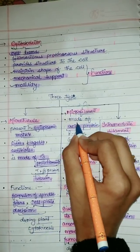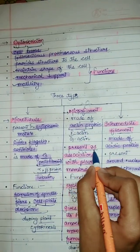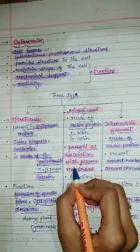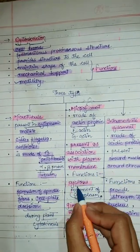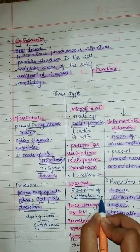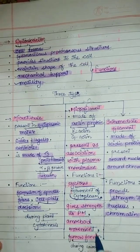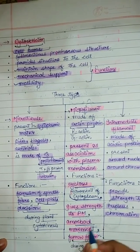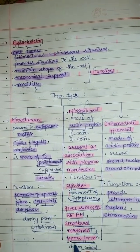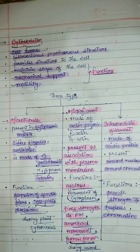Another type is microfilament, which is made of actin protein. It is present in association with the plasma membrane. The functions include cyclosis, meaning movement of cytoplasm. It gives strength to the plasma membrane, helps in amoeboid movement, and also helps in furrow formation during animal cytokinesis.